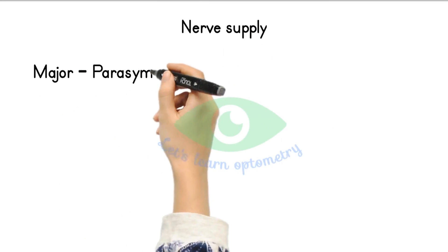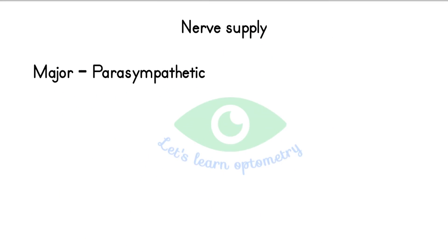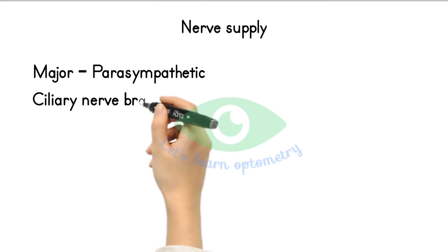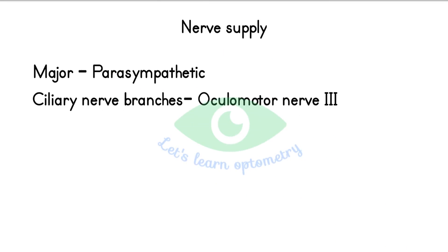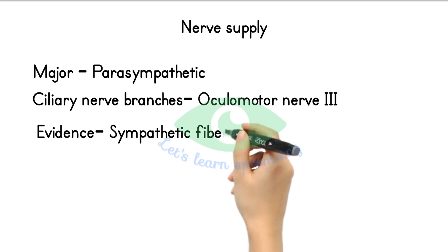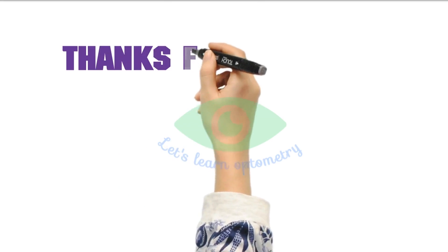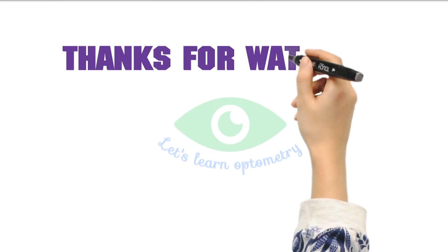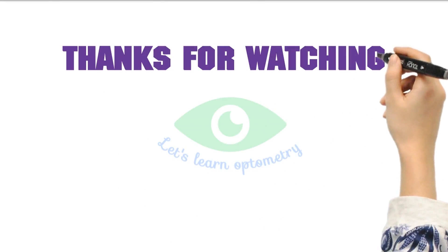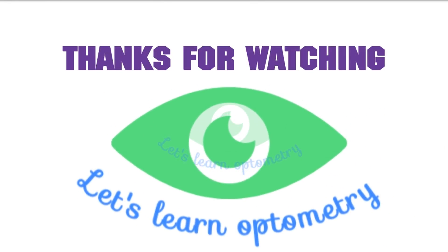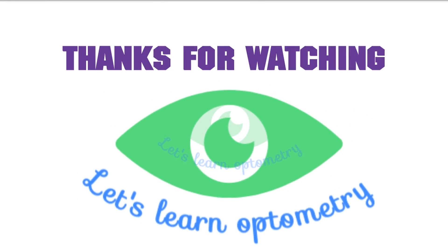Nerve supply. The major innervation is the parasympathetic innervation from the ciliary nerve branches. There is also existing evidence suggesting that the ciliary muscle receives innervation from the sympathetic fibers of the autonomic nerve. Thanks for watching. Subscribe to Let's Learn Optometry for more content.